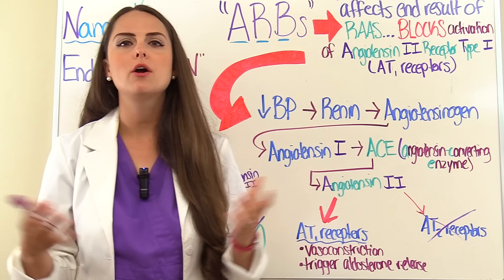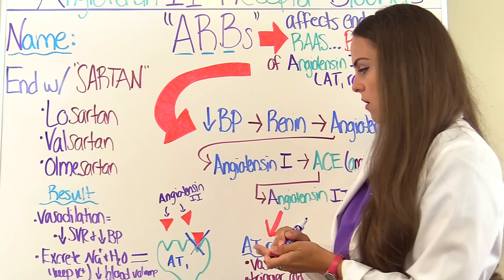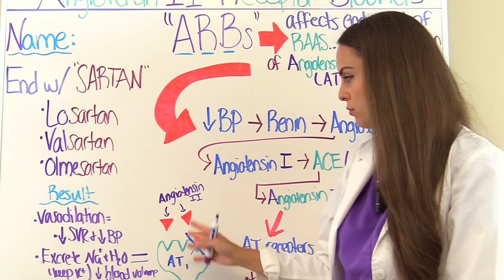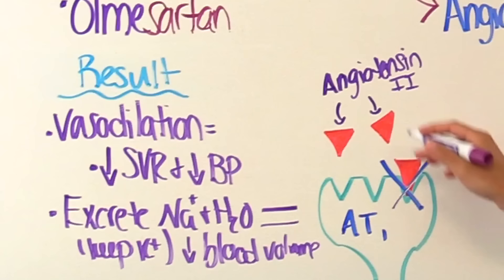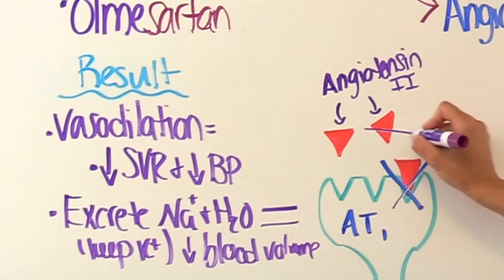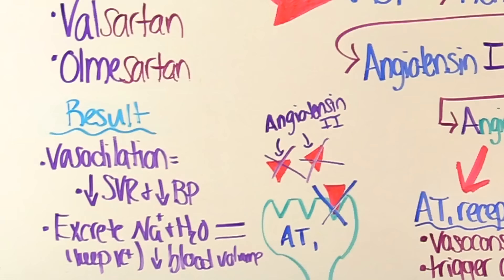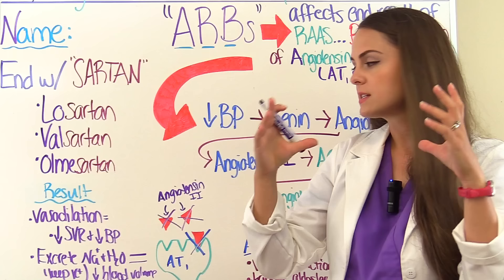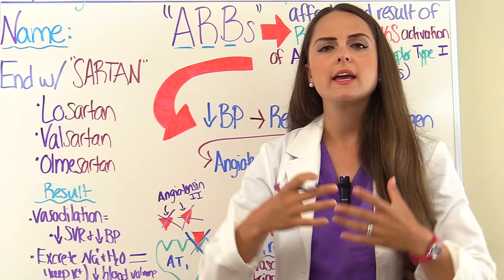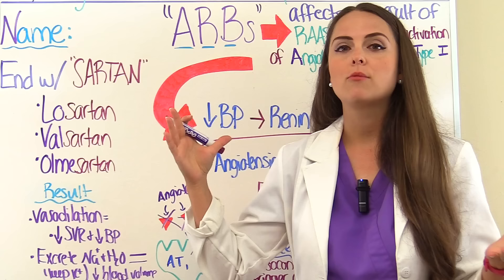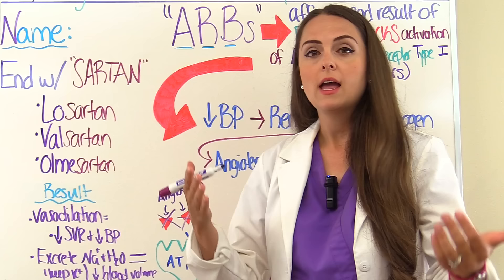Now let's throw in an angiotensin 2 receptor blocker. The angiotensin 2 receptor type 1 sites are ready to receive angiotensin 2, but because the patient has taken an ARB, that connection is not going to happen. Angiotensin 2 cannot bind to the type 1 receptors. The result is vasodilation of the vessels, which decreases systemic vascular resistance and decreases blood pressure, making it a lot easier for the heart to pump blood — decreasing afterload. We also get a decrease in preload, and the kidneys excrete sodium and water instead of retaining it, while keeping some potassium.